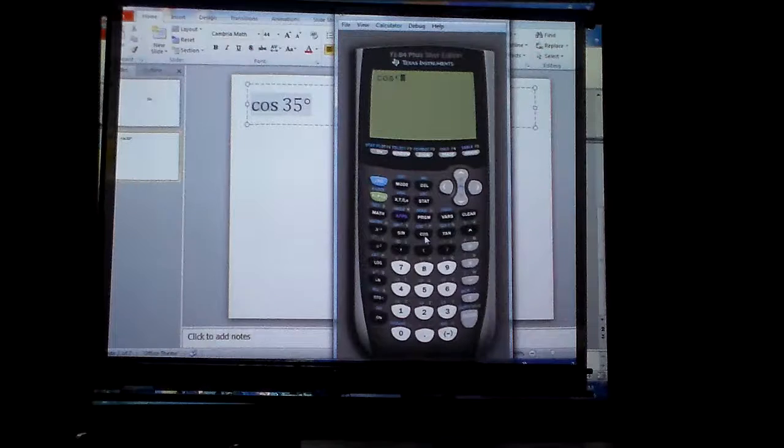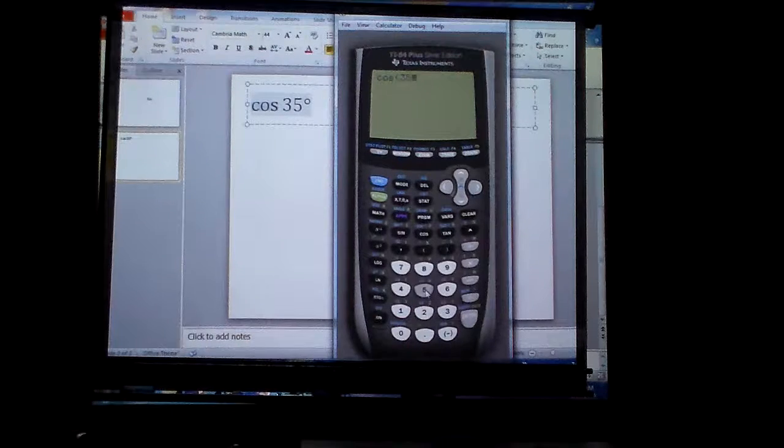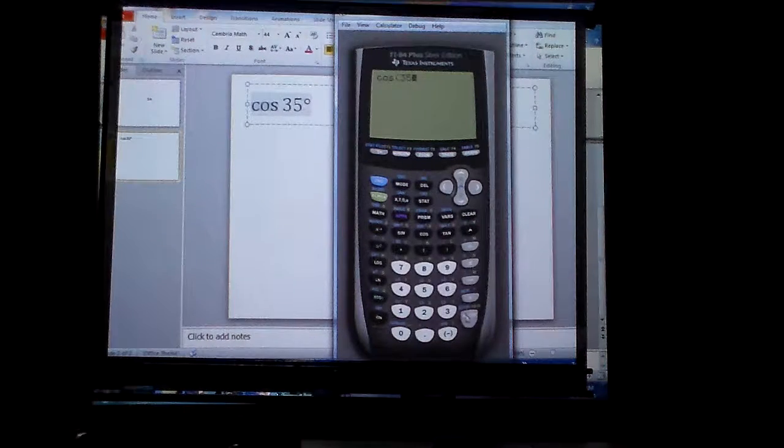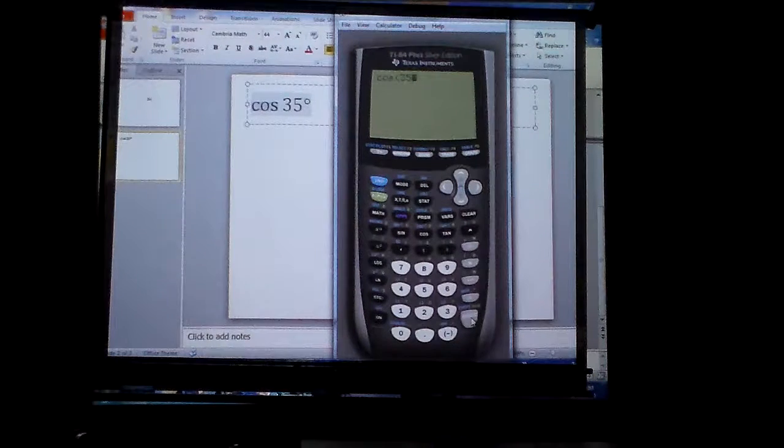And now all I have to do is type in cosine 35, and I don't have to close the parentheses because it is in degrees, so I'm just going to hit enter.